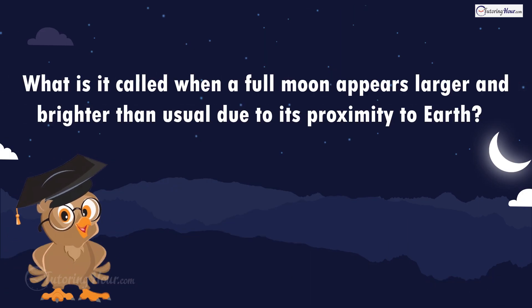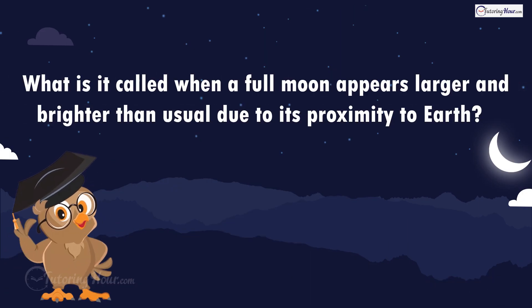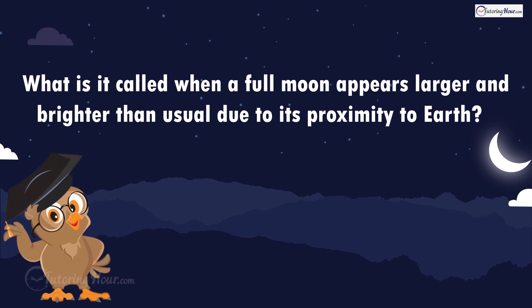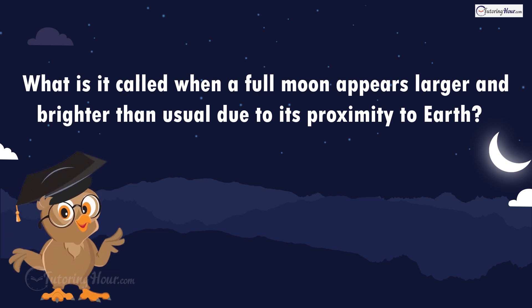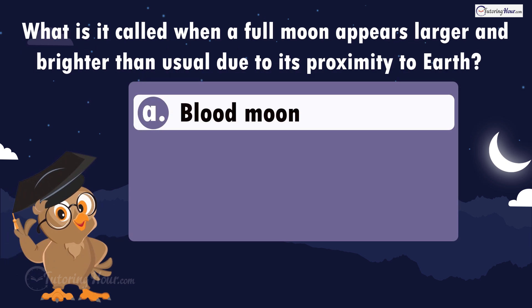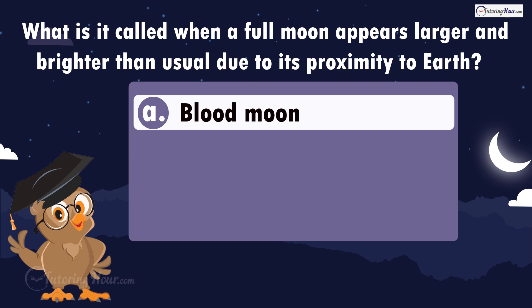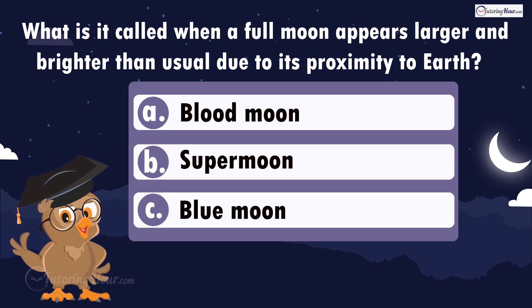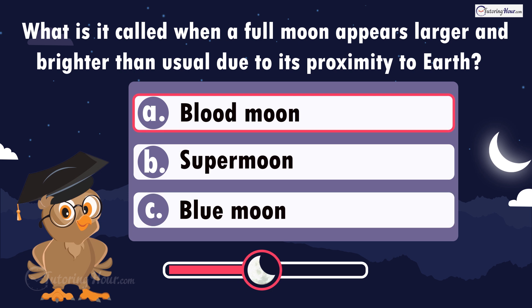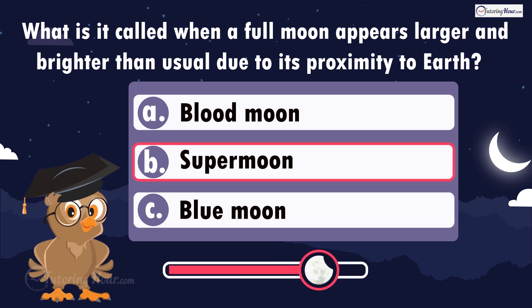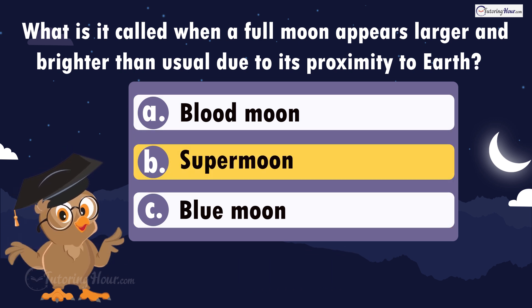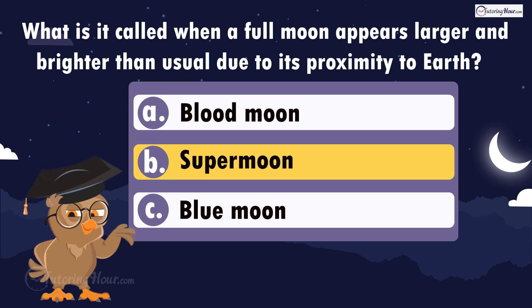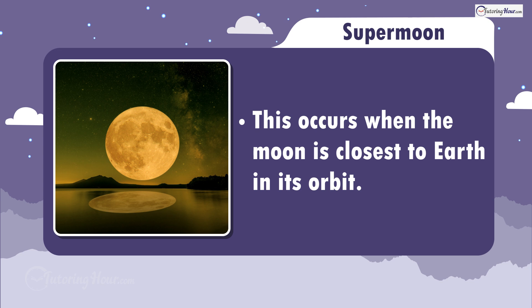What is it called when a full moon appears larger and brighter than usual due to its proximity to Earth? Is it A, blood moon; B, super moon; or C, blue moon? The correct answer is super moon. This occurs when the moon is closest to Earth in its orbit.